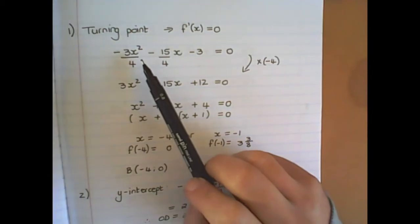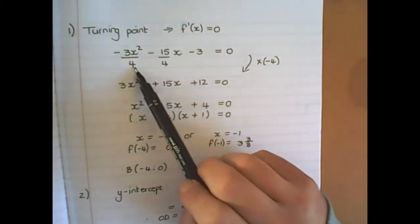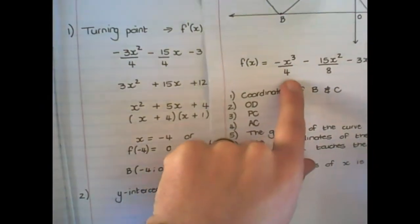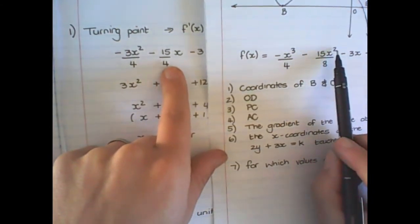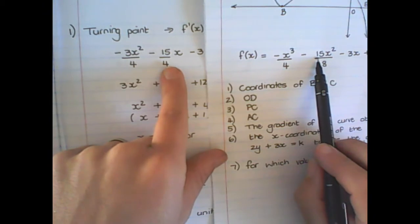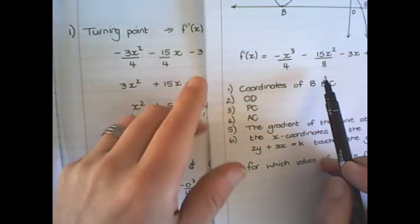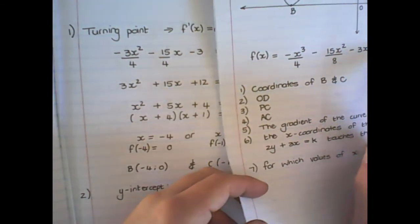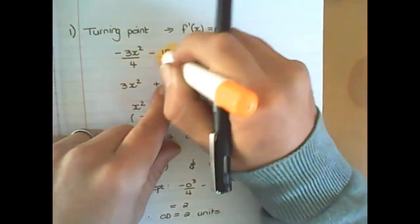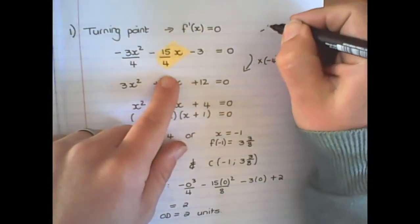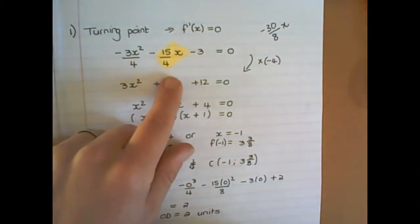So negative x cubed over 4 will give me negative 3x squared over 4. Notice that it's staying over 4. In the second term, if I differentiate it, now it becomes over 4 because I have 2 times 15, which is 30, divided by 8. And that stays 15 over 4 if I simplify the fraction. And then I have negative 3, and the 2 doesn't have an exponent. So the only tricky part here is this part, where I already manipulated the fraction of negative 30 over 8x, and I made that negative 15 over 4x, all right?